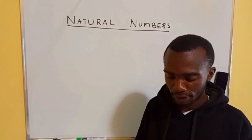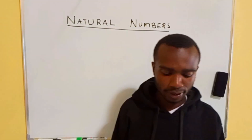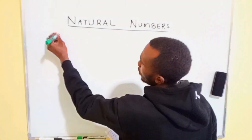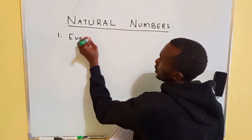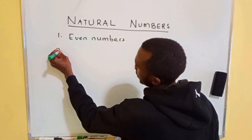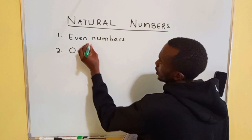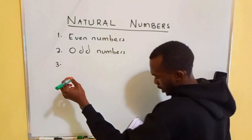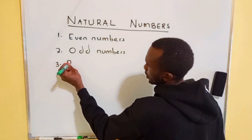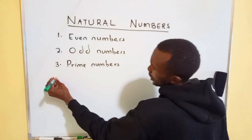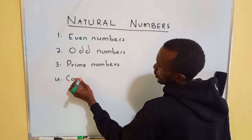Thank you and welcome to my YouTube channel. Today I'll talk about how to teach rational numbers. In rational numbers I'm going to cover: number one, even numbers; number two, odd numbers; number three, prime numbers; and finally, composite numbers.